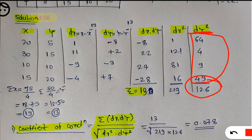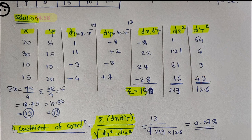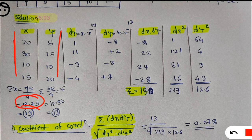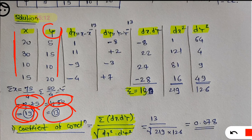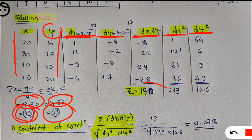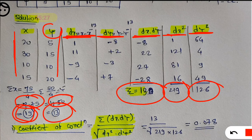To recap what we have done in the table: x is given, y is given. x̄ was calculated as 18.75 but taken as 19 for ease of calculation. ȳ was calculated as 12.5 but taken as 13. dx, dy, dx into dy, dx square, and dy square were all calculated. Summation of dx into dy is 13, summation of dx square is 219, and summation of dy square is 126.